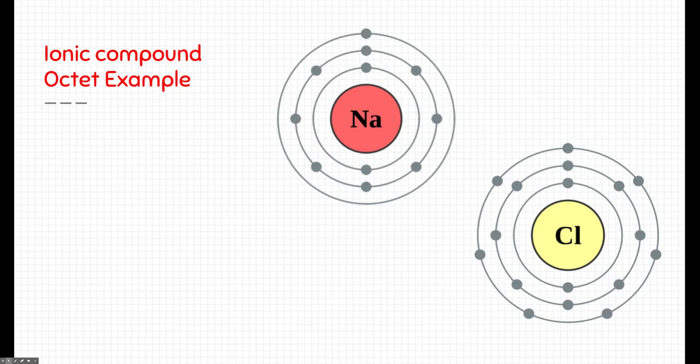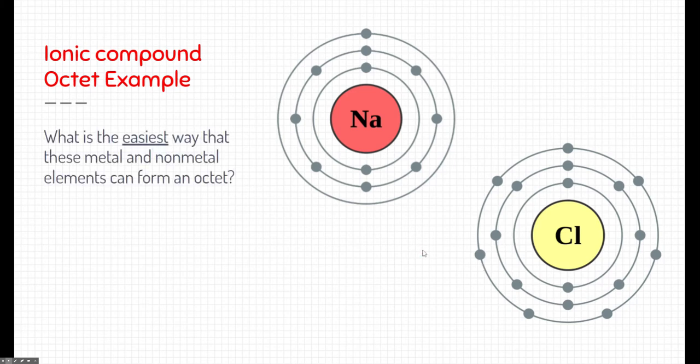Let's start with an ionic compound. Here's an octet example. Here we have two Bohr models, one of sodium and one of chlorine. If you take a look, we want to figure out what's the easiest way for these elements to get an octet. Well, remember, sodium has a low electronegativity.